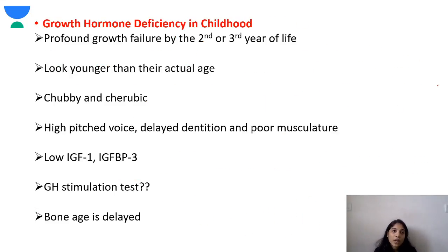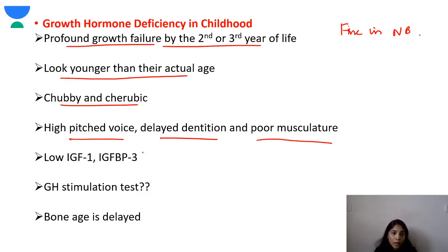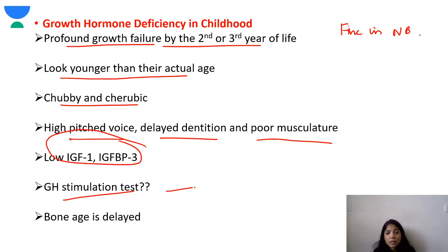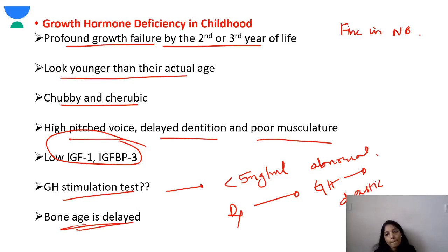If there is growth hormone deficiency presenting in childhood, the child is fine in the newborn period. There is a sudden profound growth failure by the second or third year of life. These children look younger than their age — they are chubby and cherubic, have a high-pitched voice, delayed dentition, and warm extremities. IGF-1 and IGF binding protein 3 are low. On growth hormone stimulation test, a value below 5 nanograms per ml is abnormal. Bone age is delayed. Treatment with growth hormone shows drastic improvement; without treatment, profound short stature results.